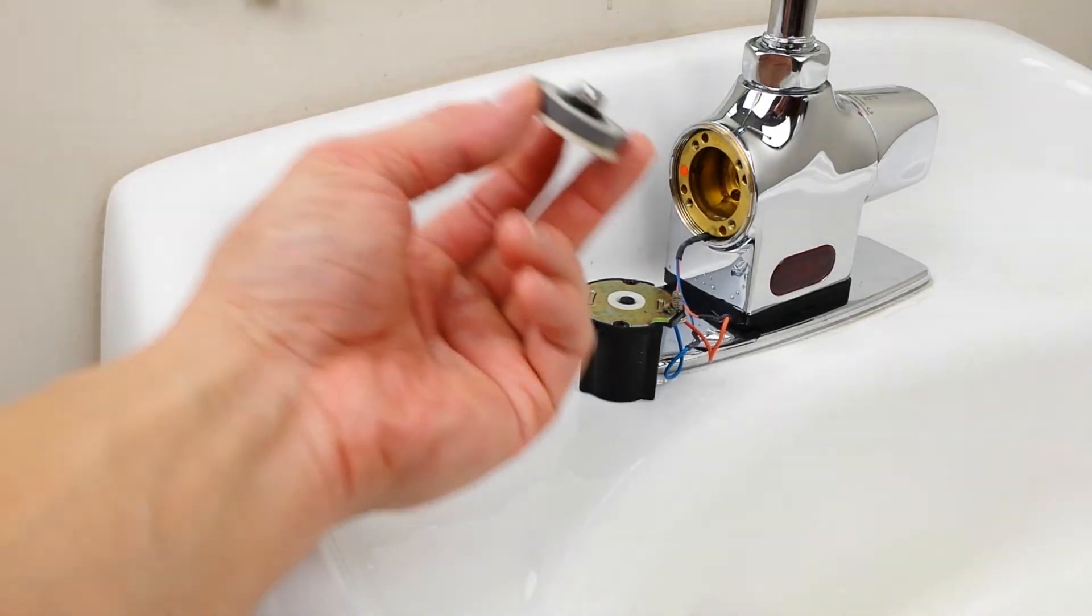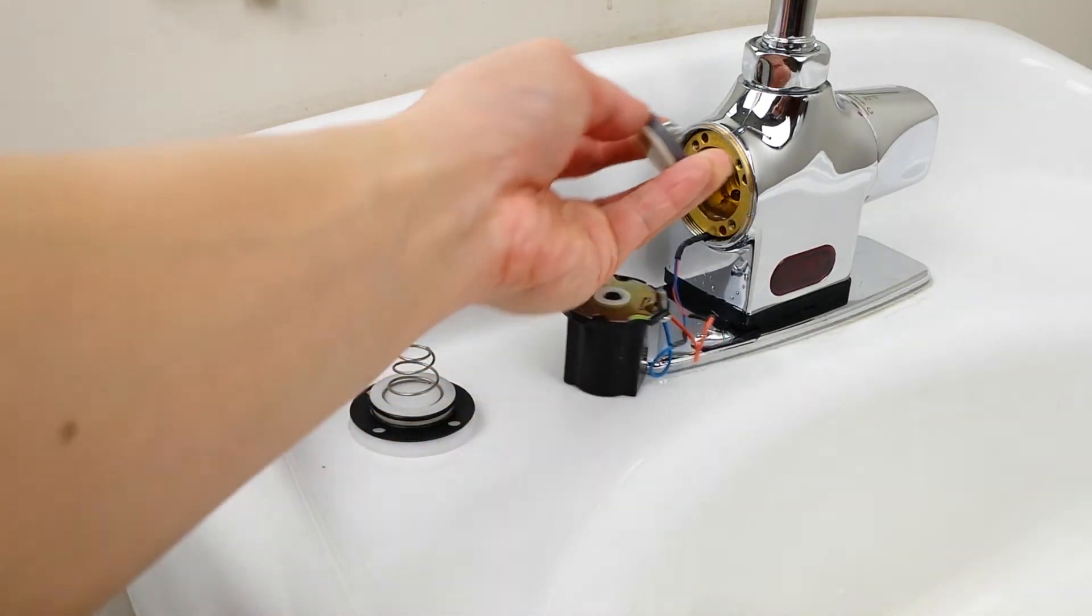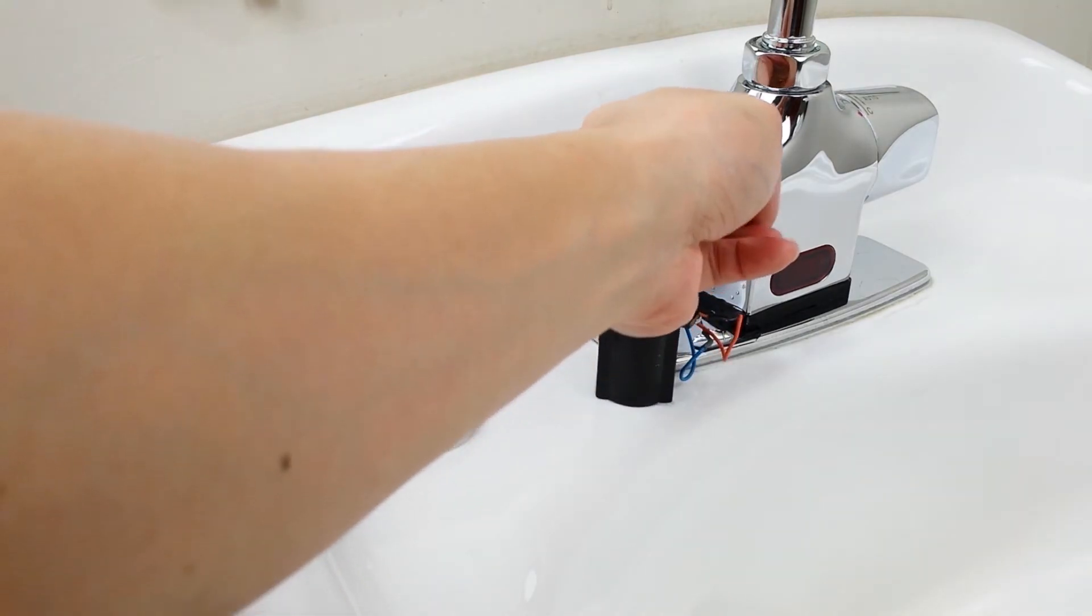Take the control disc included in the kit and install it into the faucet, ensuring that you push it down all the way.